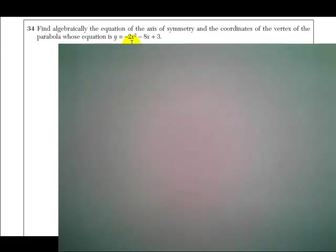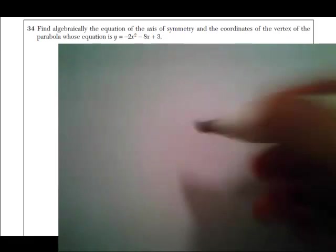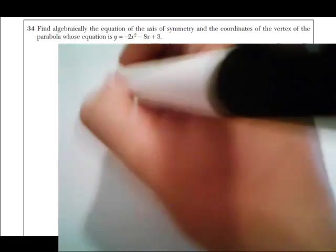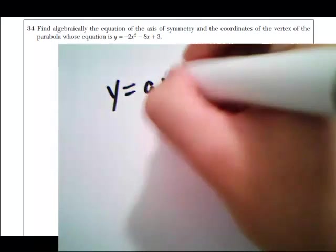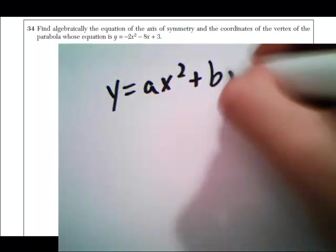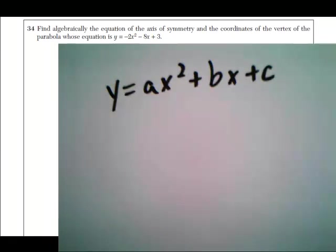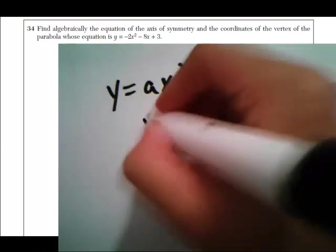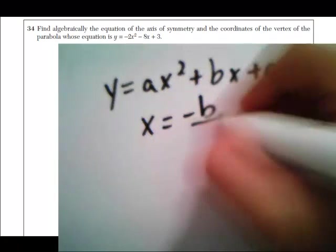is y equals negative 2x squared minus 8x plus 3. Okay, so first let's talk about the axis of symmetry. If you remember, for a parabola that's y equals ax squared plus bx plus c,